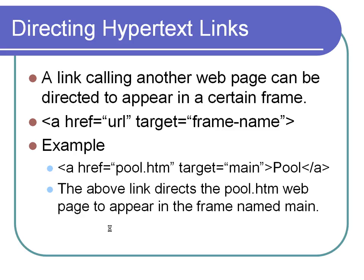You can use a link in one frame to put a web page into another frame. You use the anchor tag with href pointing to the web page you want to load, and then target equals the name of the frame where you want to place it. For example, if we had a web page called pool.html and a frame named main, clicking the link would go out, get pool.html, and load it into the main frame on our web page.